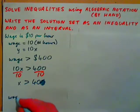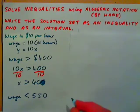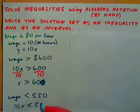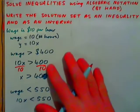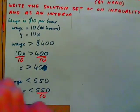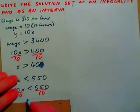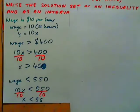If your wage is to be less than $550, we write 10x less than 550. Dividing both sides by 10, we get x is less than 55. So if you work less than 55 hours, you get less than $550.